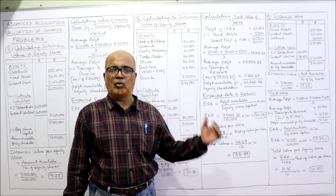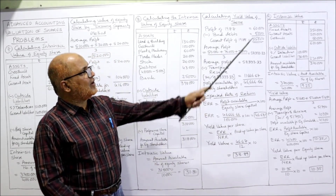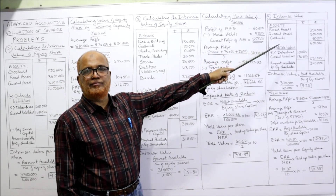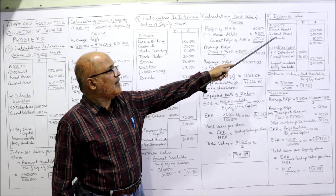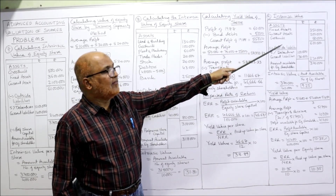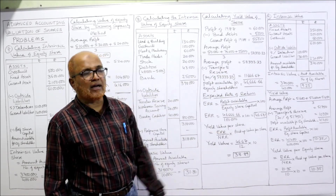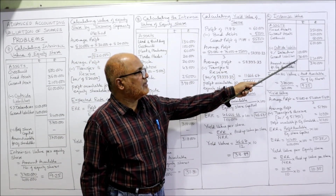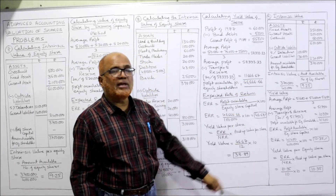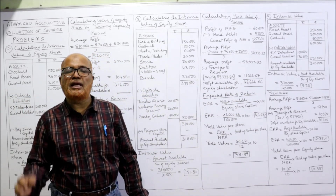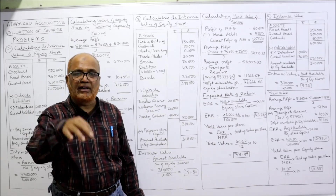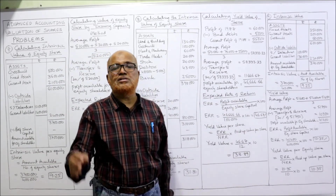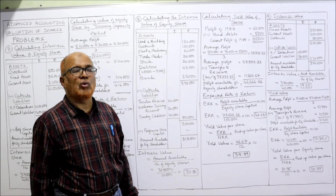Exactly similar to the previous one. First, intrinsic value. Assets — fixed assets: 3,50,000 (current value, not book value). Current assets: 2 lakh. Goodwill: 50,000. Total assets: 6 lakh. Outside liabilities: 5% debentures 1 lakh, current liability 1 lakh 30,000 — total 2 lakh 30,000. There is no preference share capital.